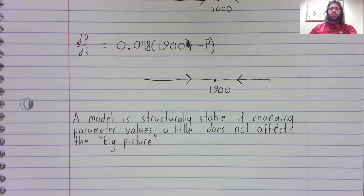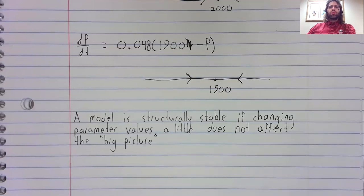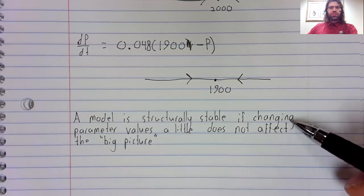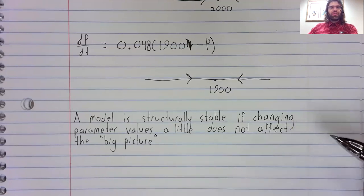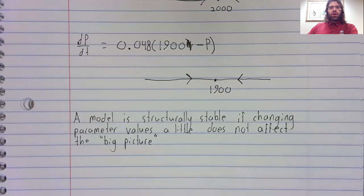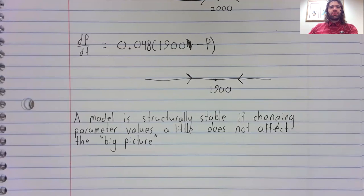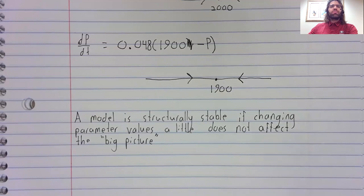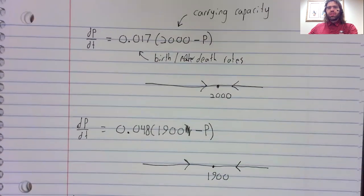This is an example of structural stability. Now this definition is clearly kind of informal, but a model is structurally stable if changing parameter values a little does not affect the big picture of what's happening.